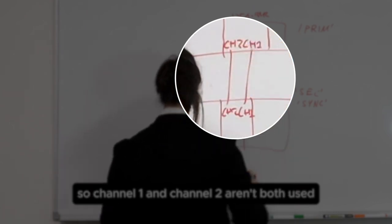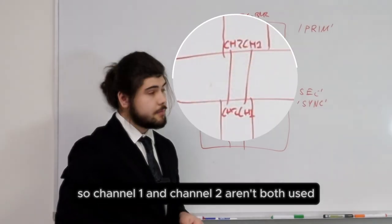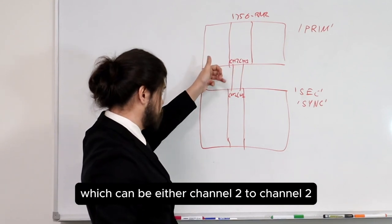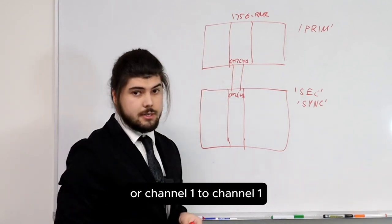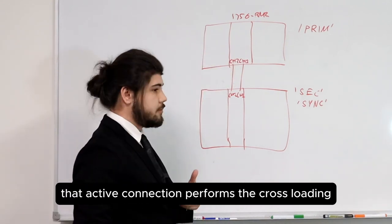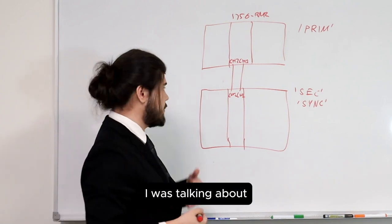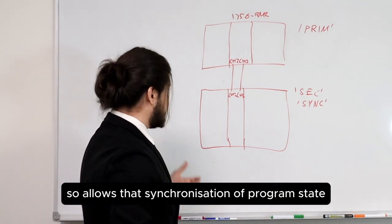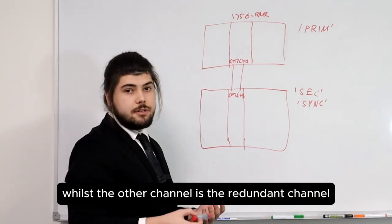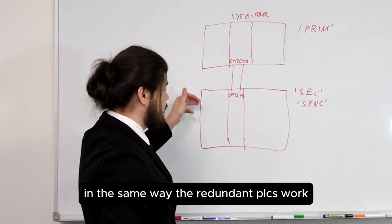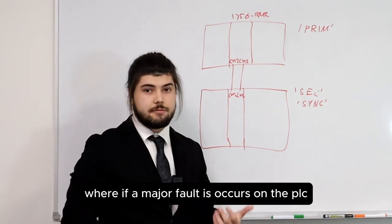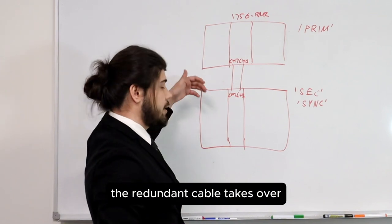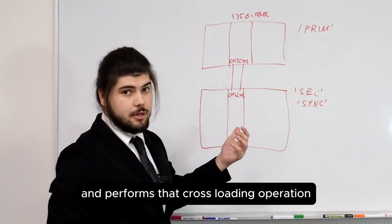Channel 1 and channel 2 aren't both used simultaneously. We have an active connection, which can be either channel 2 to channel 2 or channel 1 to channel 1. That active connection performs the cross-loading, allowing synchronization of program state, whilst the other channel is the redundant channel. In the same way the redundant PLCs work, if a major fault occurs on the PLC, the redundant cable takes over and performs that cross-loading operation.